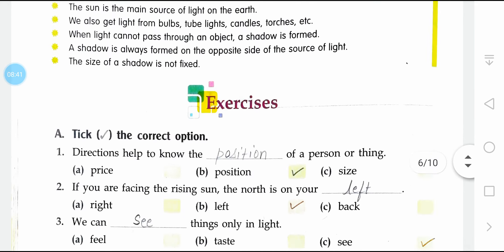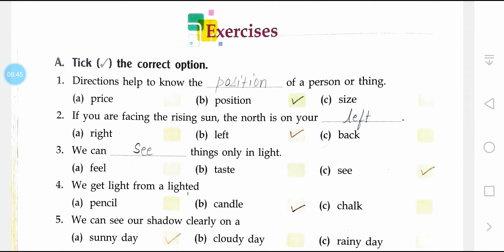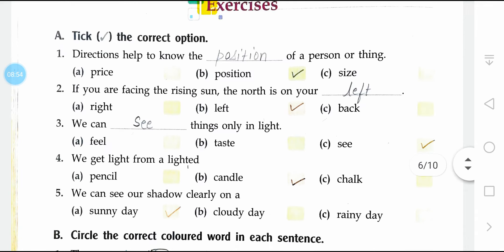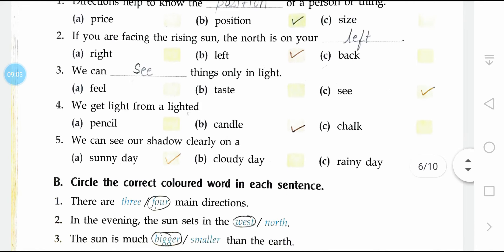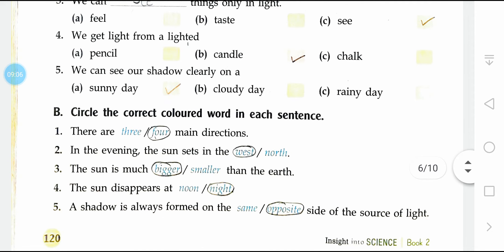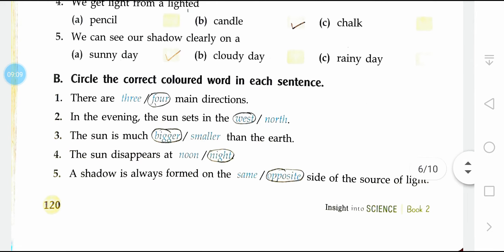Now come to the exercises. Directions help to know the position of a person or thing. If you are facing the rising sun, the north is on your left. We can see things only in light. We get light from a lighted candle, not from a pencil or chalk. We can see our shadow clearly on a sunny day. In the evening the sun sets in the west. The sun is much bigger than the Earth. The sun disappears at night. A shadow is always formed on the opposite side of the source of light.